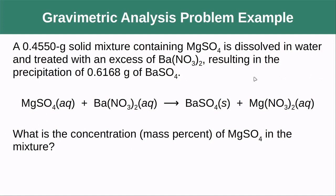With this information, we should be able to come up with the reaction that occurred. We had magnesium sulfate, we added barium nitrate, and we produced barium sulfate. If we look at what's left over, we have nitrate and magnesium, so we produced magnesium nitrate — a double displacement reaction. If we look at our solubility rules, barium sulfate is not soluble, so it is the thing precipitating out as a solid. And we're asked: what is the mass percent of magnesium sulfate in the mixture?